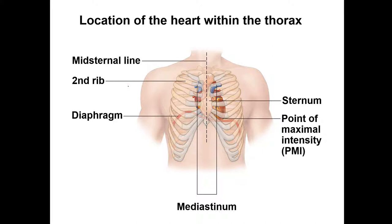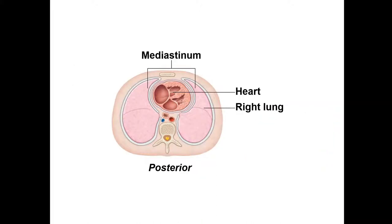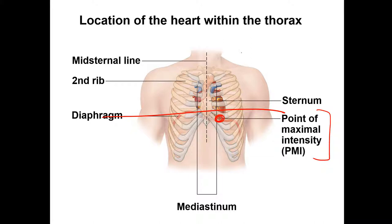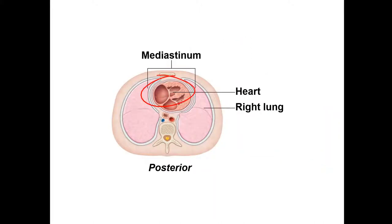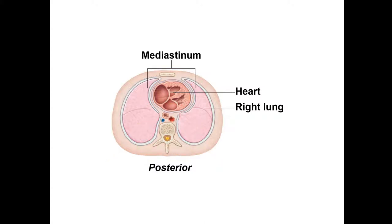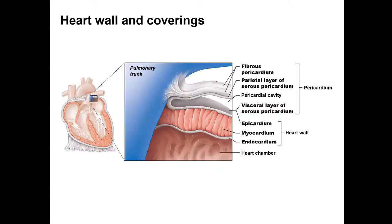You don't have to worry too much about exactly where it's positioned relative to the second rib, although it is nice to know the point of maximal intensity — this is where we put our stethoscope. This is just the bird's eye view from the top. If we take a cross section and look down, we see the heart, the lungs, the backbone, and the mediastinum there.